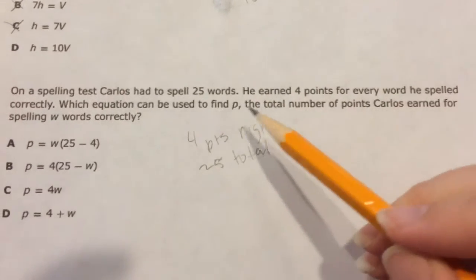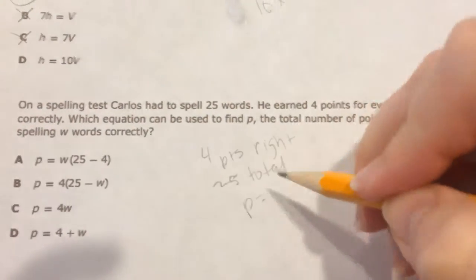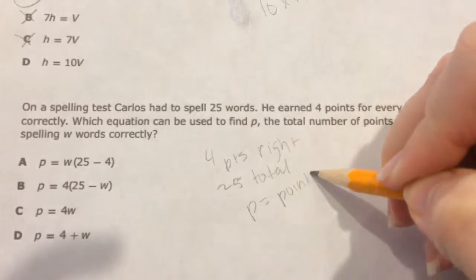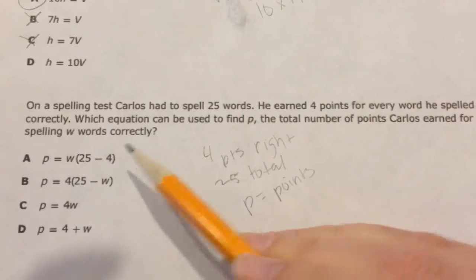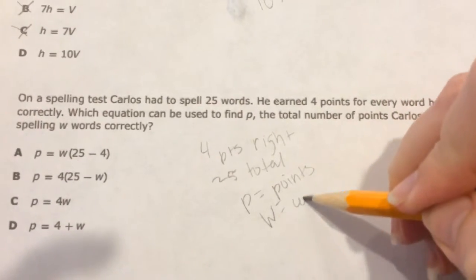Which equation can be used to find P, the total number of points? So P is his points. Carlos earned for spelling W words correctly. So W is what was correct.